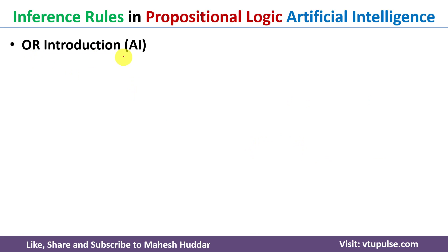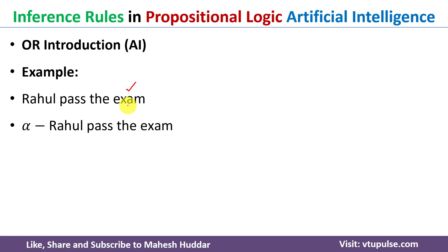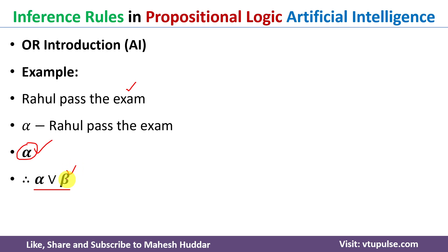The next rule is Or Introduction. Given the statement 'Rahul passed the exam,' we write alpha for 'Rahul passed the examination.' Since alpha is true, we can write alpha or anything — alpha or beta, alpha or gamma — because true or anything is true. This is how we introduce 'or' when proving statements.